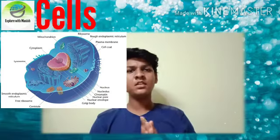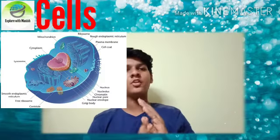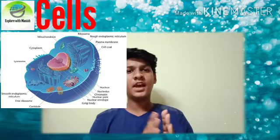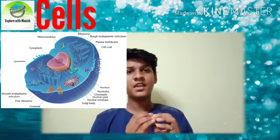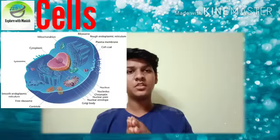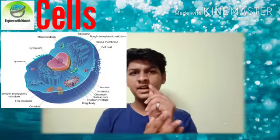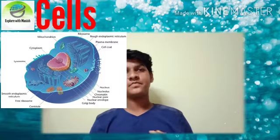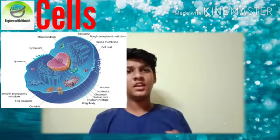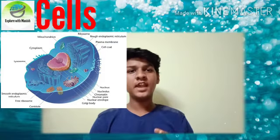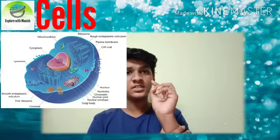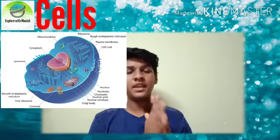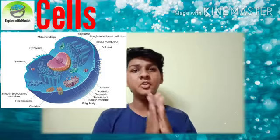The main part of the cell is the mitochondria. The cell also contains a jelly-like fluid called cytoplasm, which helps the cell. Other main parts include the lysosome, cell coat, ribosomes, and the nucleus at the center of the cell.